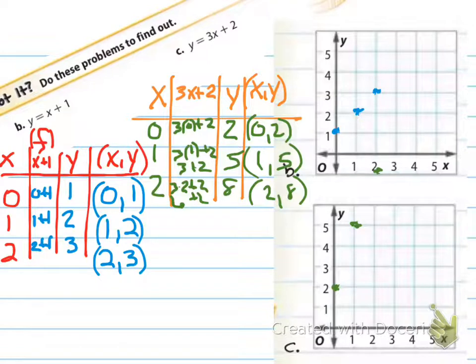For B, using 0, 1, 2, I end up with an ordered pair of 0, 1, 1, 2, and 2, 3, which I went ahead and graphed here for B. If you connect the dots, you end up finding that you have a straight line. For C, unfortunately, when I used my 0, 1, 2, it went off their little grid that they gave me. I went 0, 2, 1, 5, and 2, 8. I just kind of estimated where that last one was going to be. But it is a straight line. So these are both linear equations.